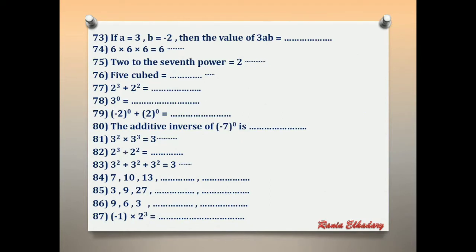Number 73: if A = 3 and B = negative 2, then the value of 3AB equals what? 3AB means 3 × A × B = 3 × 3 × negative 2 = negative 18.